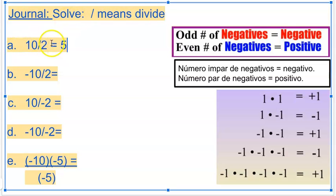So 10 divided by 2, that's 5. That's all positive, it's positive. I'm going to put this sign in there.